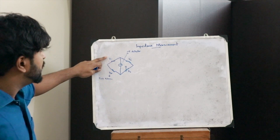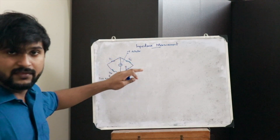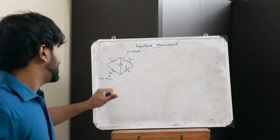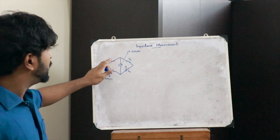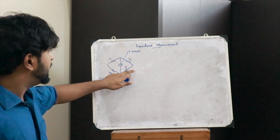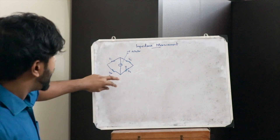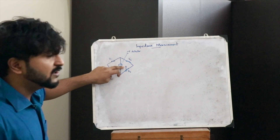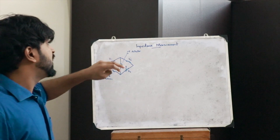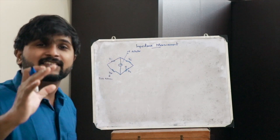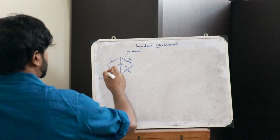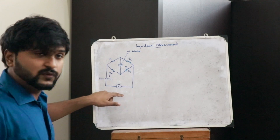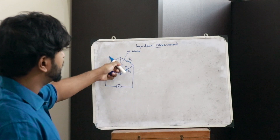If we know the value of Z1 and Z2, and this particular impedance bridge is in the balanced condition, then we can easily find Z4. Let Z3 be a variable resistance. By changing the value of Z3 we can see if there is a null detection here — that is the condition for a balanced impedance bridge. Let this be connected to a particular source. When this bridge is connected to the source, some kind of deflection is shown in this particular null detector.